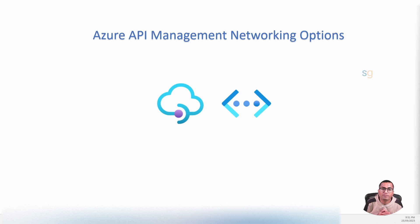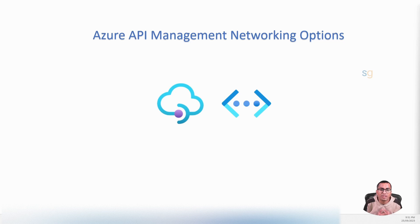Networking is a backbone of any well-architected API strategy. Whether you are a small startup or an enterprise, the way you set up networking can significantly impact the security, performance and reliability of your APIs. In today's video, we will understand the various networking options available in Azure API Management, so that by the end you will be able to choose the right option that best suits your business needs.